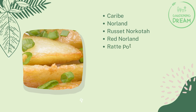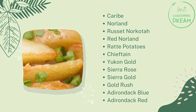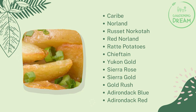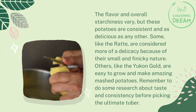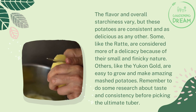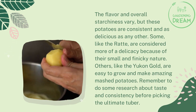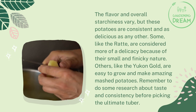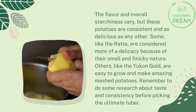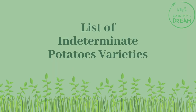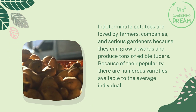Popular determinate potato varieties include: Caribe, Norland, Russet Norcota, Red Norland, Rat potatoes, Chieftain, Yukon Gold, Sierra Rose, Sierra Gold, Gold Rush, Adirondack Blue, and Adirondack Red. The flavor and overall starchiness vary, but these potatoes are consistent and delicious. Some, like the Rat potato, are considered more of a delicacy because of their small and finicky nature. Others, like the Yukon Gold, are easy to grow and make amazing mashed potatoes. Remember to research taste and consistency before picking the ultimate tuber.